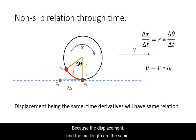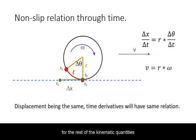Because the displacement and the arc length are the same, and the time of motion is shared, for the rest of the kinematic quantities, you just need to take the time derivative and say that for velocity, the velocity versus angular velocity, or acceleration versus angular acceleration, they are still related through the radius.